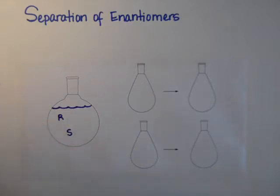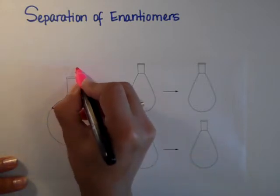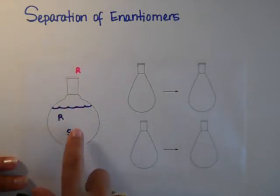You cannot separate them because they have the same physical and chemical properties. But this is what you're going to do. You're going to add to it a molecule that is enantiomerically pure. You're going to add a molecule that has a chiral center or maybe two chiral centers, and that chiral center is absolutely pure.